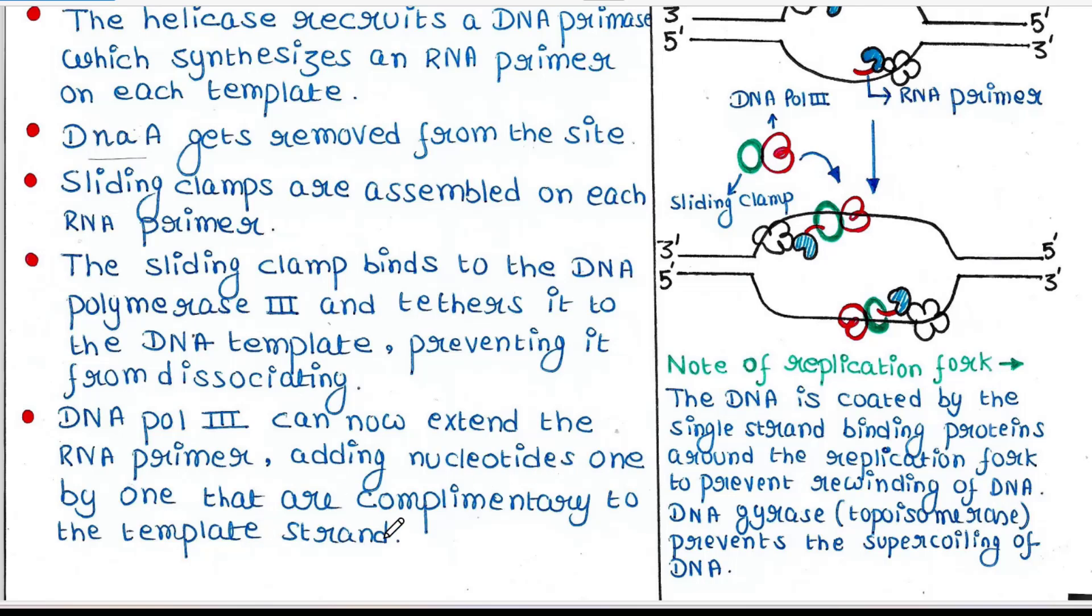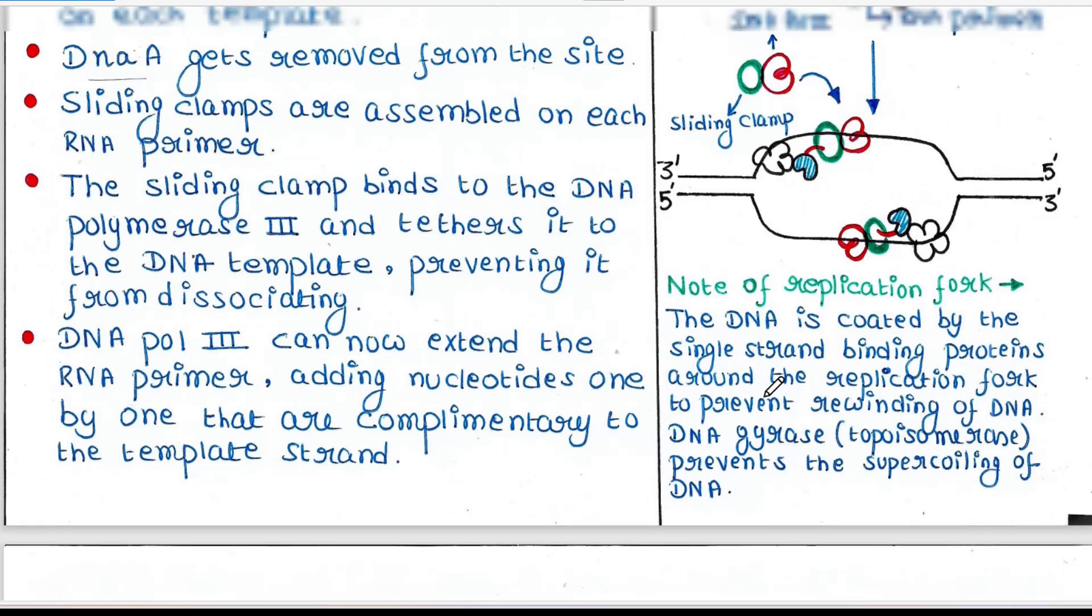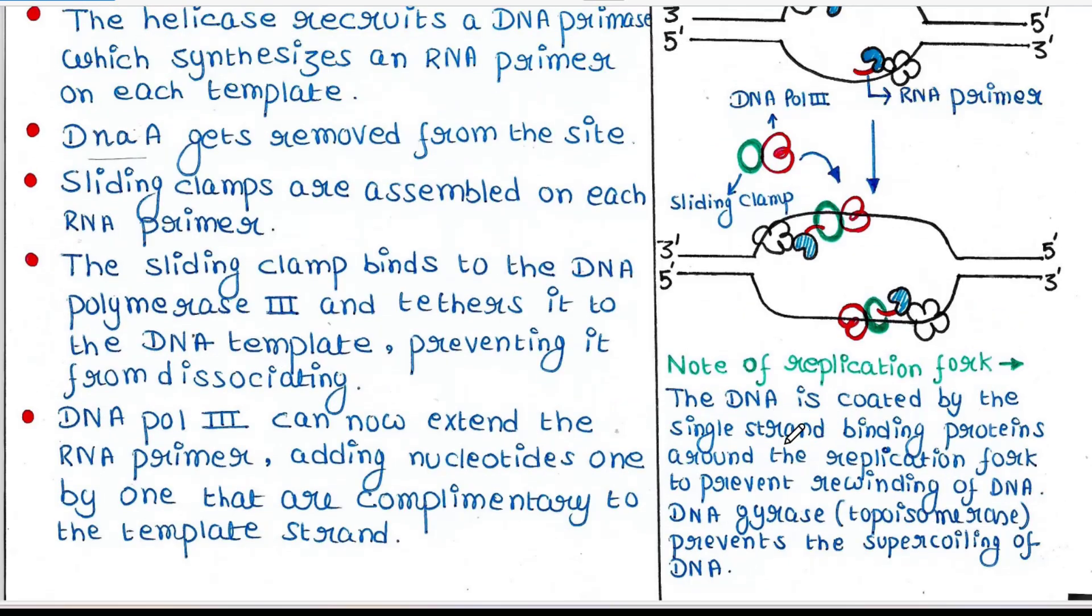DNA polymerase 3 will extend this RNA primer. Here is a note: the DNA is coated by single strand binding proteins around the replication fork to prevent rewinding of DNA.